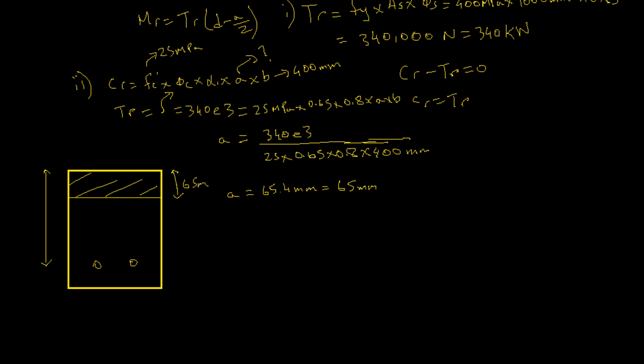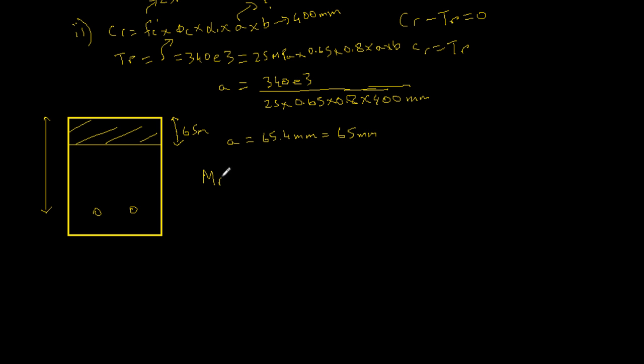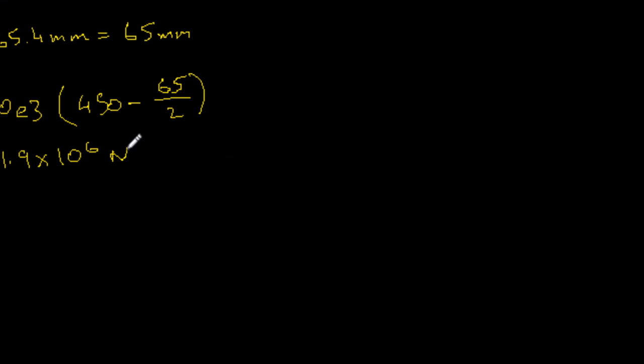So we have a equals 65. Now we have all the parameters to solve for our moment resistance. Mr equals 340,000 Newtons times d is 450, minus 65 over 2. So we want to find Tr times d minus 65 over 2, which gives us